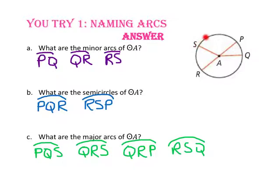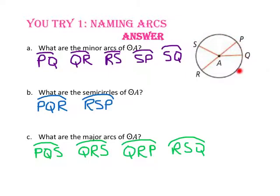Since starting at point R, passing through points S, P, and Q sends us back to point R, we are going to move on and start with point S. From point S to point P, less than 180 degrees, so we have a minor arc, arc SP. Starting from point S, passing point P onto point Q — still less than 180 degrees — so we have a minor arc, arc SPQ. Starting at point S, passing points P and Q onto point R, we have a major arc, so major arc SPR. And since starting at point S and passing through points P, Q, and R brings us back to point S, we are completely done with the arcs on circle A.